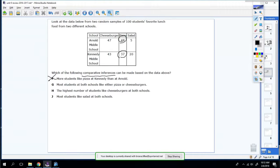Most students at both schools like either pizza or cheeseburger. That is true. Not many people chose salad. The highest number of students like cheeseburgers at both schools. That's not true, because at Arnold, it's higher for pizza. Most students like salad. Well, that's just completely false, because it's the lowest number for both schools. So the answer is G.